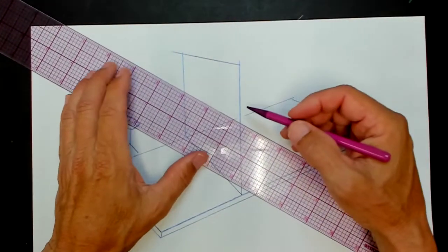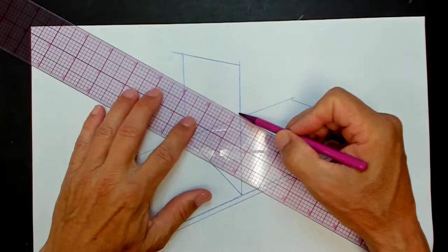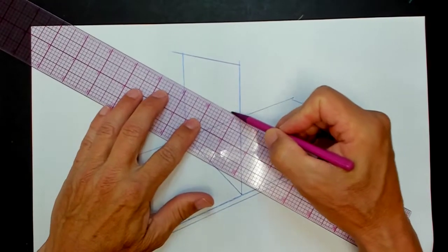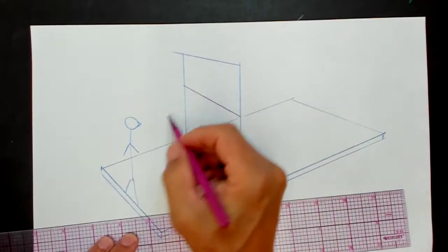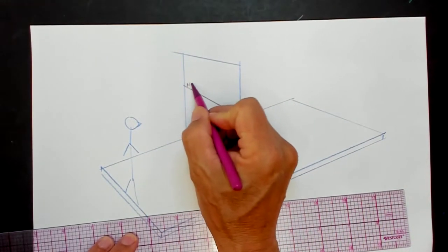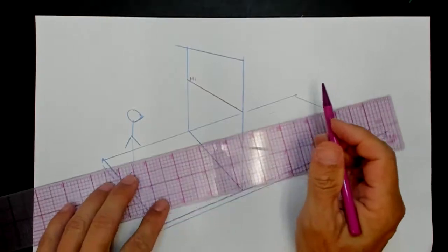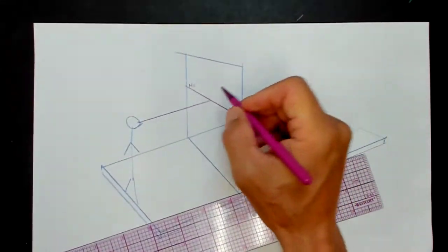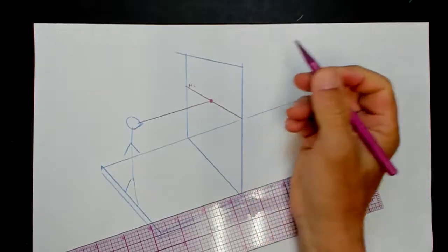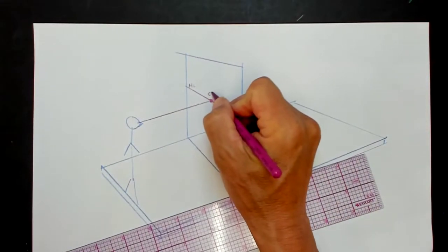The horizon line is at the viewer's eye level, and if the viewer is looking straight ahead, the center of vision will be right there. Center of vision.